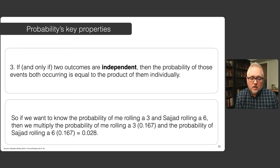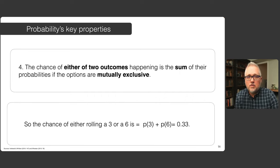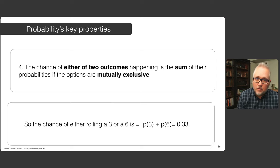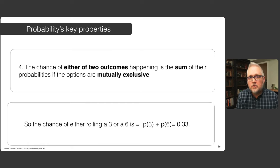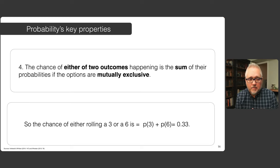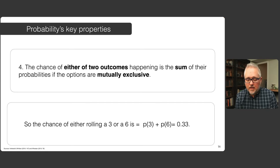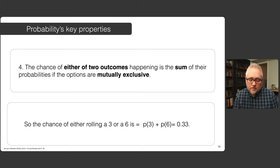If you want to look at the joint probability of two independent things happening, you multiply those two terms together. The chance of either one of those things happening is the sum of those two probabilities if those options are mutually exclusive. So the chance of either rolling a three or a six is the sum of the probability of a three and the probability of a six — but only if those are two mutually exclusive options, each with their own distinctive probability value.